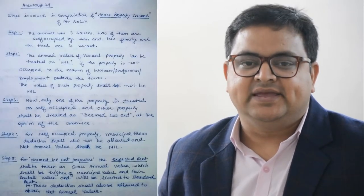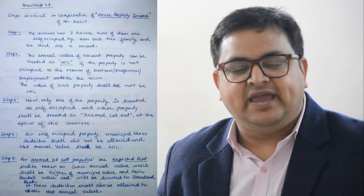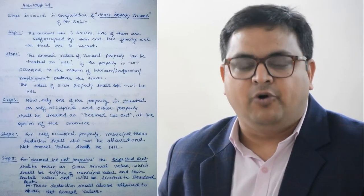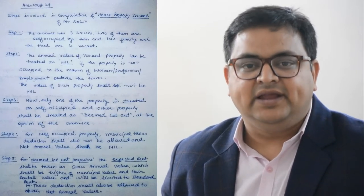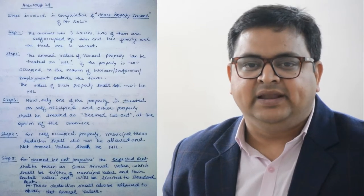The Net Annual Value (NAV) of the self-occupied house becomes nil. In house property computation, we start with Gross Annual Value (GAV) minus municipal taxes to get NAV, but for a self-occupied house we directly take NAV as nil. Section 24a deduction of 30% of NAV will not be available since NAV is nil. Section 24b — interest on borrowings for home loan — is allowed as a deduction but limited to a maximum of Rs. 2 lakh.